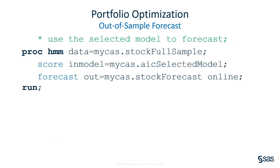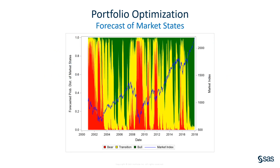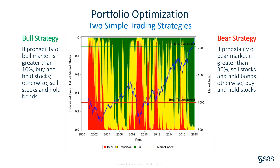Now for the second question — how to forecast those market states? This becomes very easy. You apply the selected model to the out-of-sample data and get the forecast in just one second. The forecast shown in this plot might not be what you expect: it's talking about the probability distribution of market states. It's a lot like the weather forecast — tomorrow there is a 30% chance of rain. Here, next week there is a 30% chance of bear market. For each week, the sum of probabilities of the three market states is always 1, and the plot stacks these three probabilities for each week.